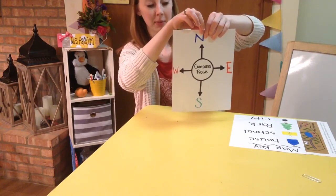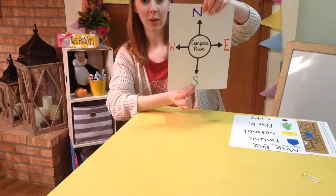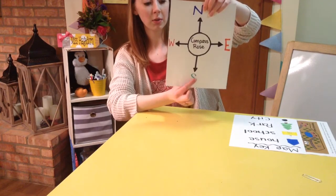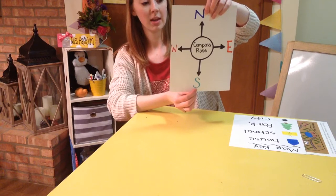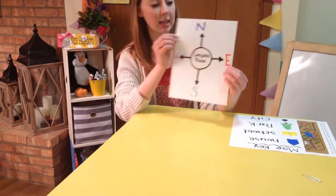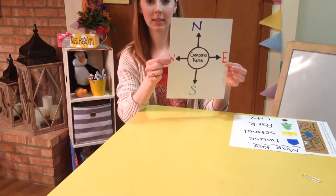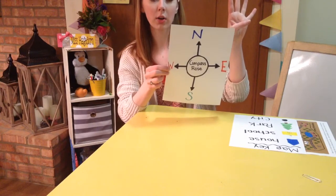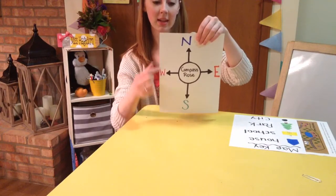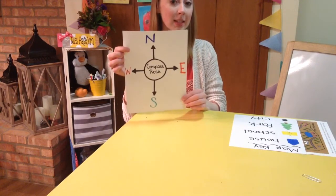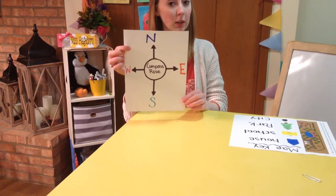North is always at the top of the compass rose, and then the opposite of north is south. South is always going to be represented by the letter S, because south starts with the S sound. And then to this side of north you're going to see east, and then opposite of east is west. Those are the four cardinal directions: north, south, east, and west. That is a compass rose, and you're always going to see one somewhere on your map — and usually on globes too.